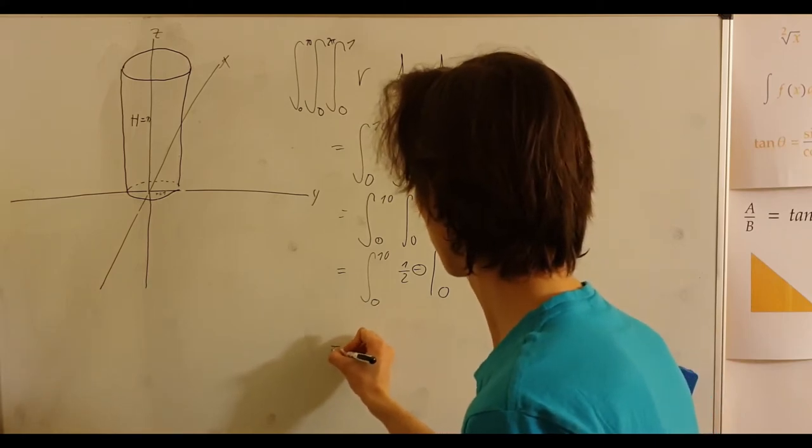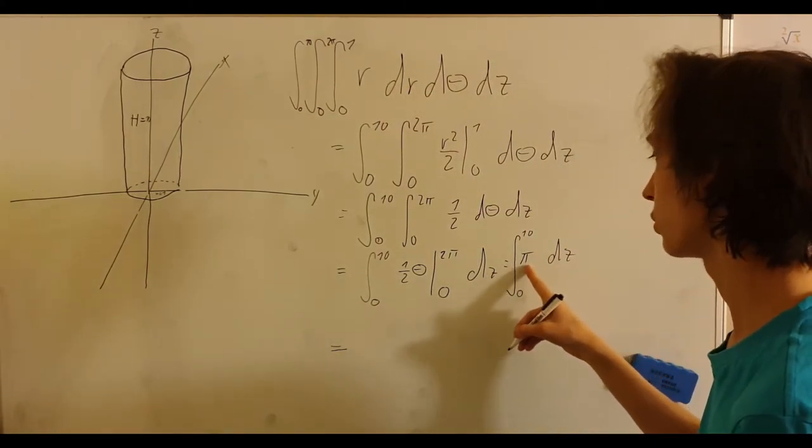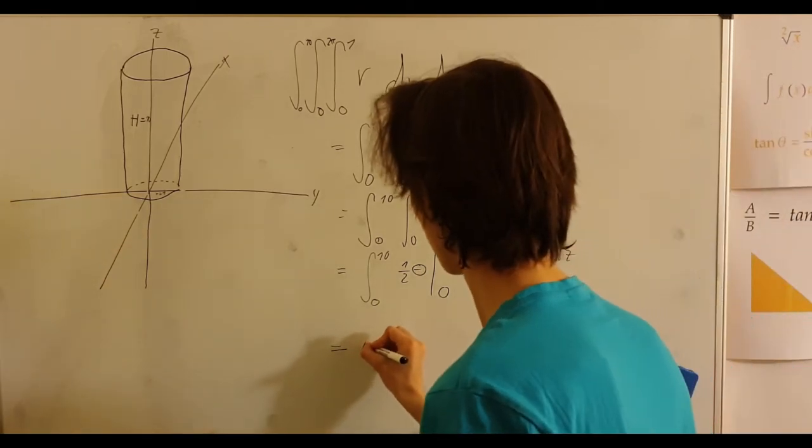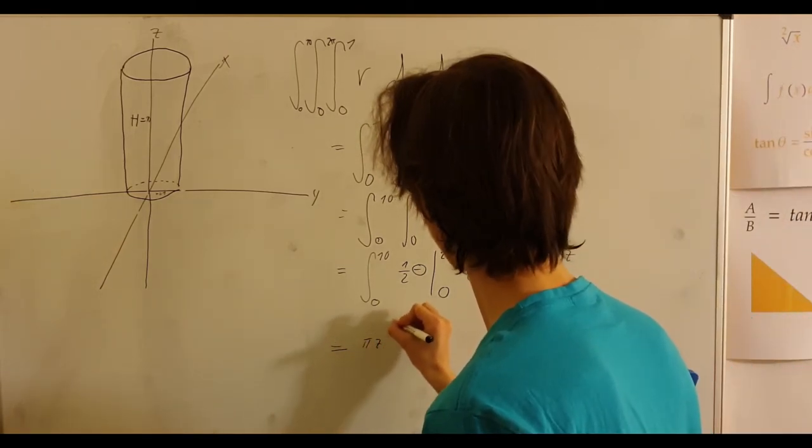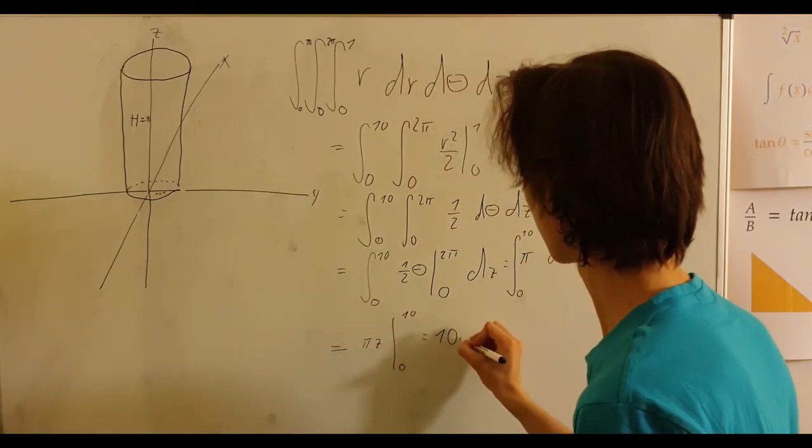Now, let me integrate in respect to dz, which will be pi z. So pi z evaluated at 10 and at 0. So this is just 10 pi.